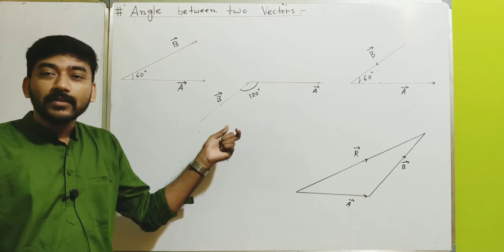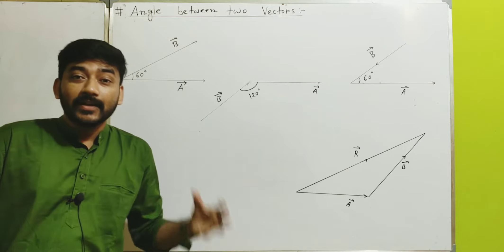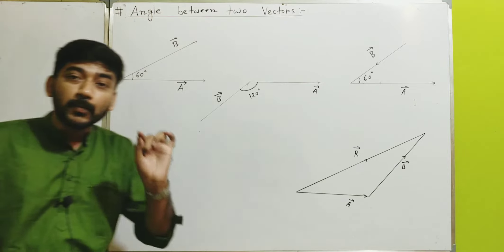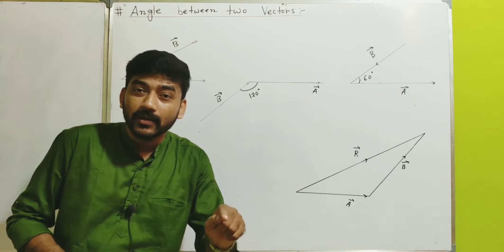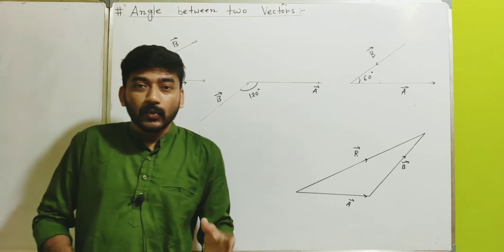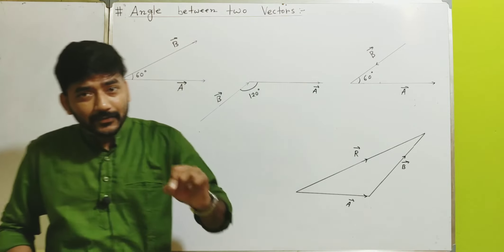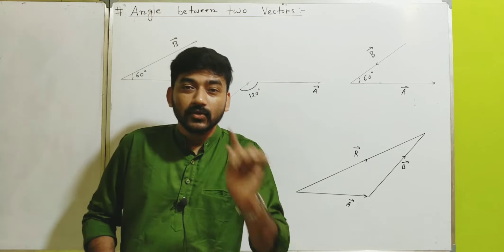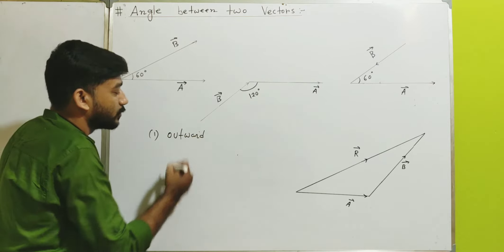To find the accurate angle between two vectors, we have to follow some rules. Only then can you find the correct angle if you know the rules. The very first rule is: you have to find out the point at which you want to find the angle between two vectors. Then you have to make sure that the two vectors at that point are in the outward direction. The vectors should be in the outward direction from that point.